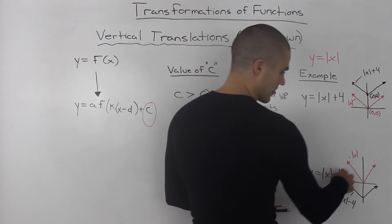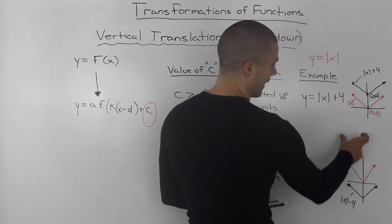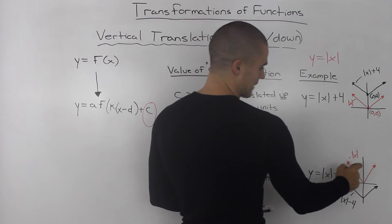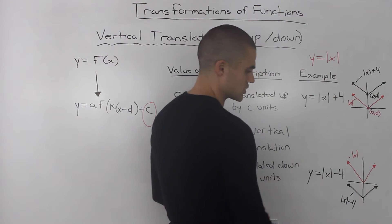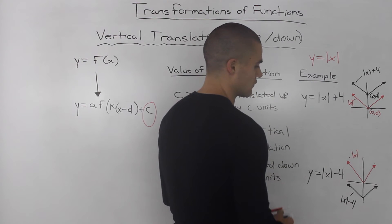Showing this in a graph, in red we have our parent function, the absolute value of X, and then shifting it down by 4, we get this transformed function, the absolute value of X minus 4.